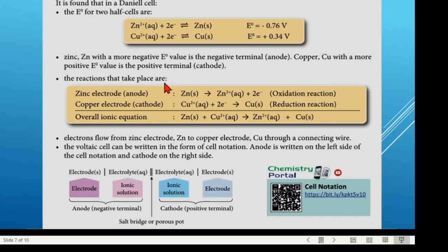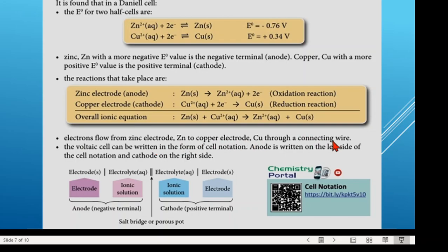The reaction at the zinc electrode (anode) is oxidation: zinc loses 2 electrons to become Zn²⁺ ions. At the copper electrode (cathode), which is the positive terminal, Cu²⁺ receives 2 electrons and becomes copper solid — this is reduction. The overall ionic equation is obtained by combining both half equations: Zn + Cu²⁺ → Zn²⁺ + Cu. The electrons cancel since they appear on both sides. Electron flow is from the zinc electrode to the copper electrode through the connecting wire.